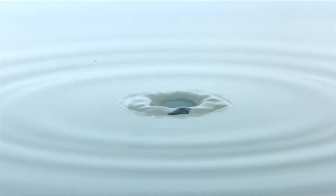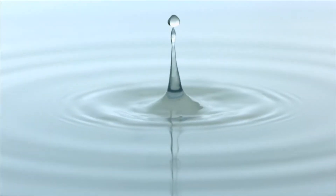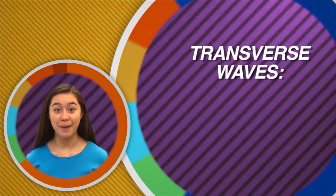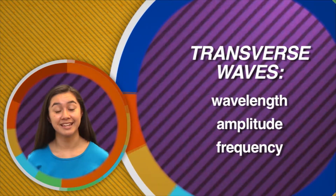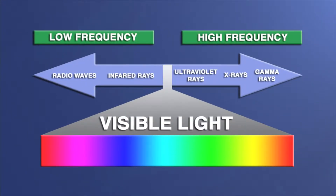Let's take a moment to review what you have learned so far. Light is actually a visible form of energy, and it travels in waves called transverse waves. Those waves have special properties that include wavelength, amplitude, and frequency. Light waves don't require a medium in order to travel, and light is part of the electromagnetic spectrum.